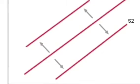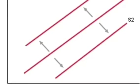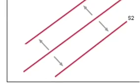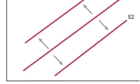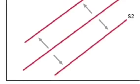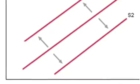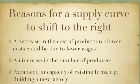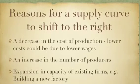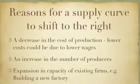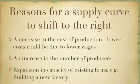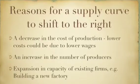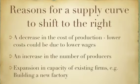If a supply curve shifts to the right it basically means that you are increasing the supply. However, a change to the supply curve to the left basically means that supply is being reduced from the producer. So what causes a supply curve to shift to the right? Well the first thing is a decrease in the cost of production. This could come from lower wages or lower raw material costs.